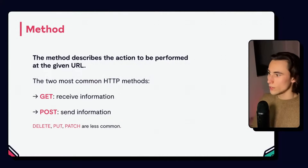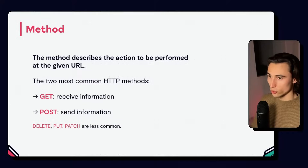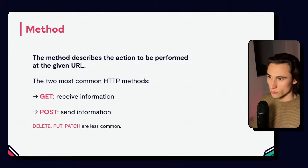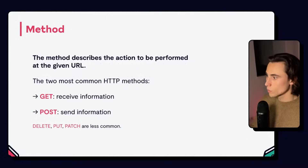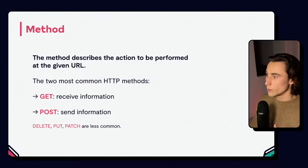Then we have the method. The method describes the action that we want to perform at the given URL. There are two main methods we're going to be using for HTTP requests: GET and POST. GET most of the time allows us to receive information — so if you're reading data in a Google Sheet, you are using the GET method. POST is going to allow us to send information — so if we want to send information from a form submission, we're going to be using the POST HTTP method. The other methods are a little bit more rare: DELETE, PUT, and PATCH are less common but can be used. Methods are always verbs, which means they describe very clearly what we're trying to do.